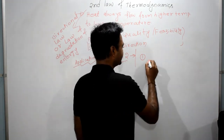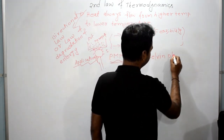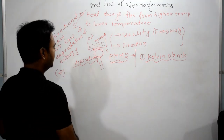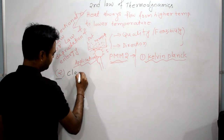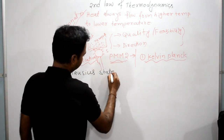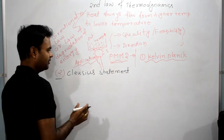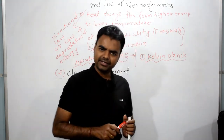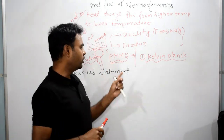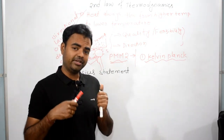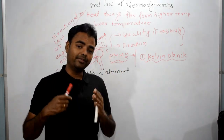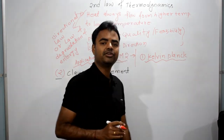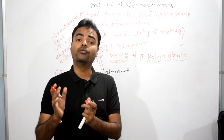Based on this concept, we have two important statements to study: one is the Kelvin-Planck statement, and the other is the Clausius statement. I will show you both diagrammatically so that you can understand them in a better way. Let's start with what the Kelvin-Planck statement is saying in simple language, in a way that is easy to remember for a lifetime.